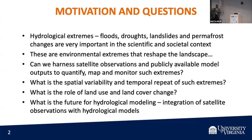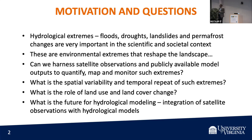When you think about it, hydrological extremes such as floods, droughts, landslides, and permafrost are very important scientifically. We all like the science, but they're very important societally. You see this in the newspaper almost all the time. These are environmental extremes which can reshape the landscape right before our eyes — we're not talking about millions or hundreds of thousands of years. The question I deal with is: how can we harness satellite observations and publicly available models to quantify this? What is the spatial variability and temporal repeat of such extremes? What's the role of land use and land cover change? And the future is fusion of data.